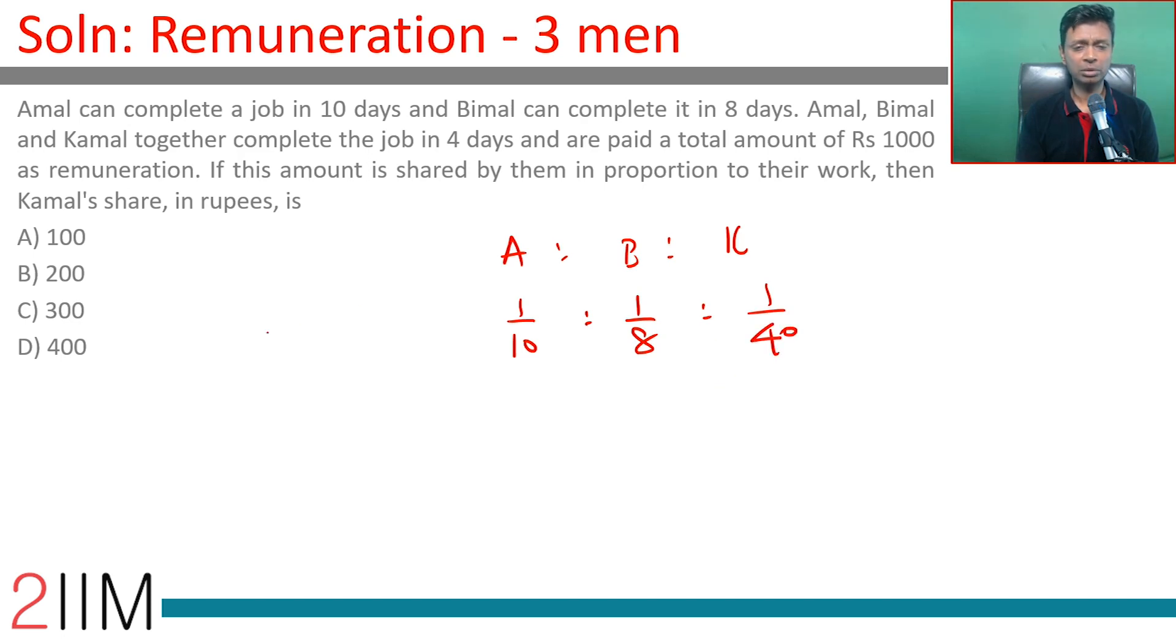Multiplying by 40, the ratio is 4 to 5 to 1. Totally they get Rs 1000, and the amount Kamal should get is one-tenth of this - one-tenth of Rs 1000, or 100 rupees.